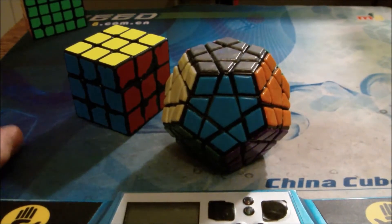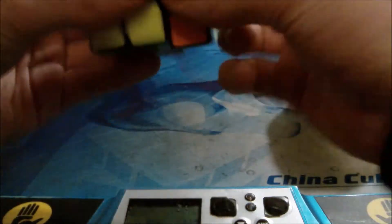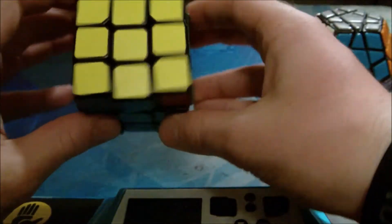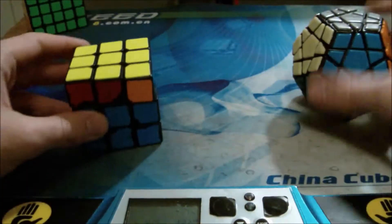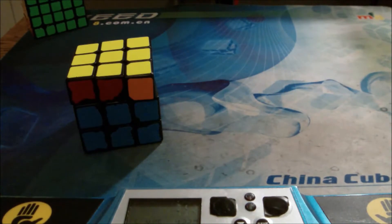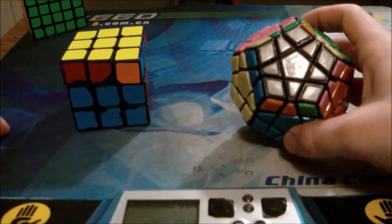So the next one is the other J-perm. So this is it on a 3x3. Same thing, just mirrored. And here's it is on a Megaminx. Same thing, but mirrored.